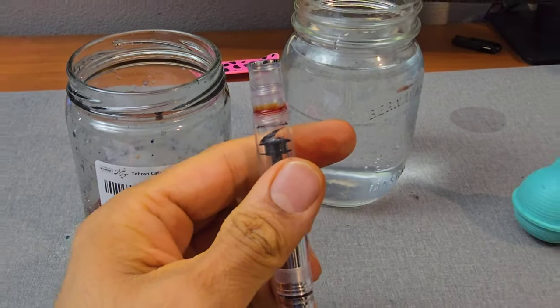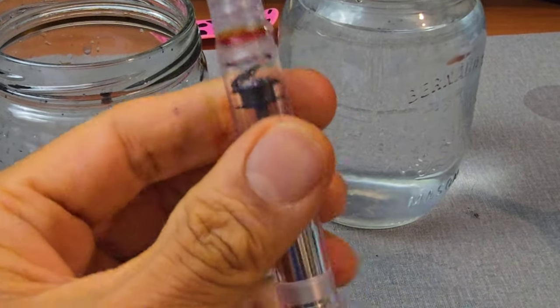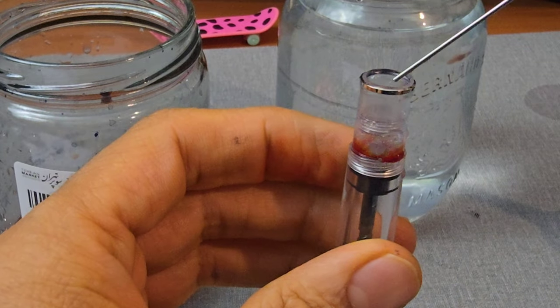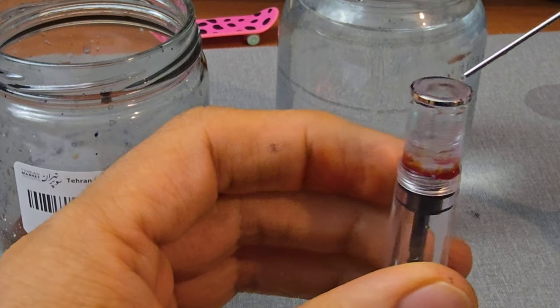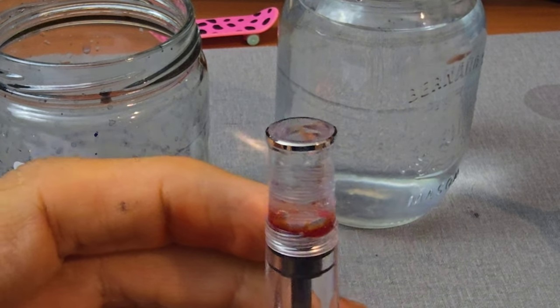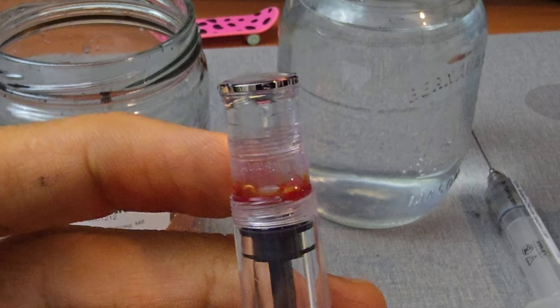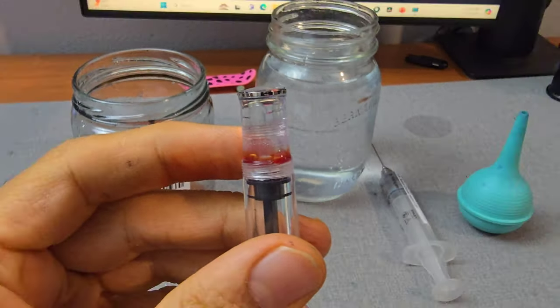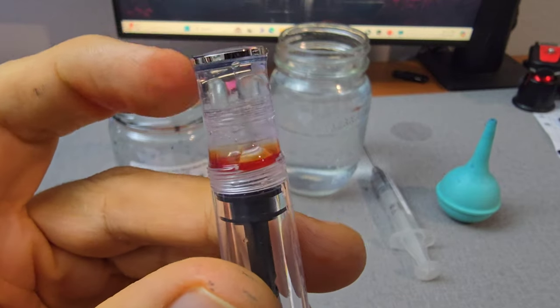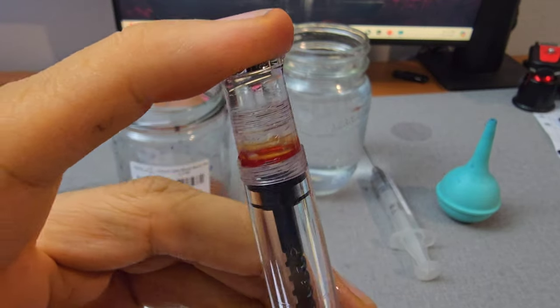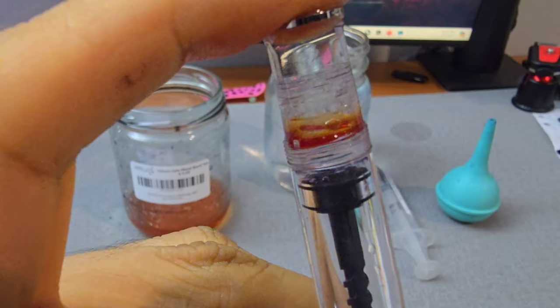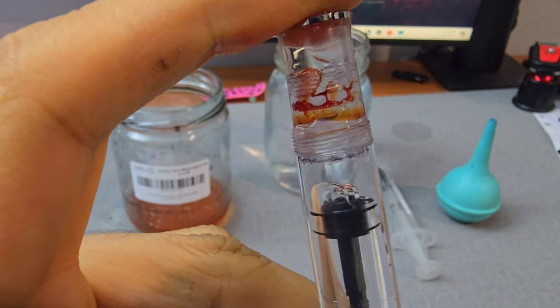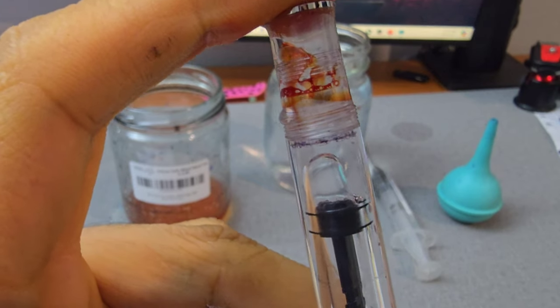So what I do now is I bring the plunger almost all the way up to the top. Fill this with water all the way to the top. Here's my trick: put your finger here, screw the plunger in.